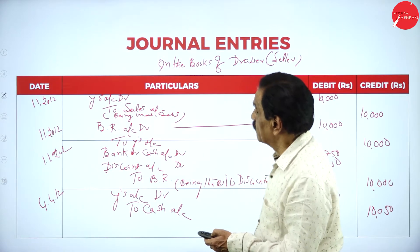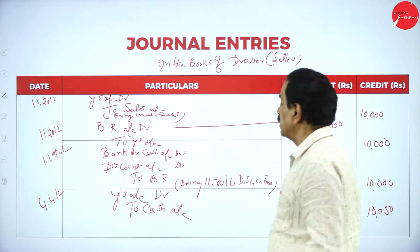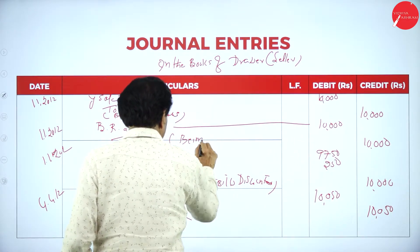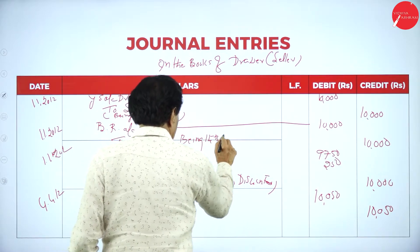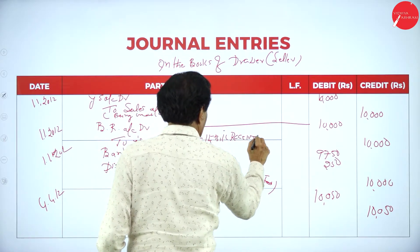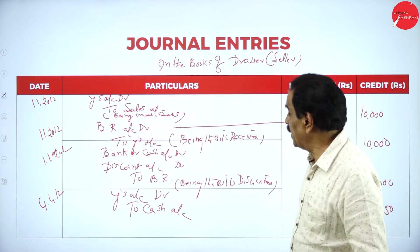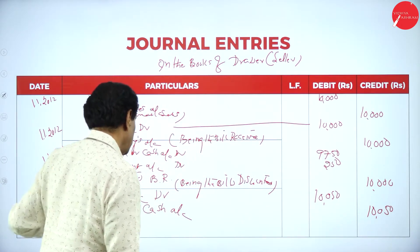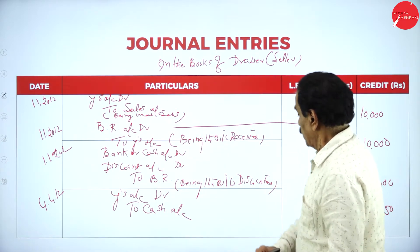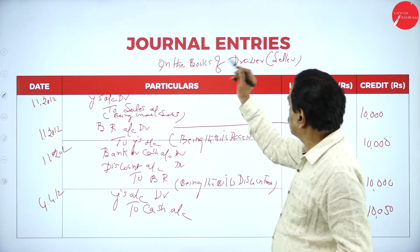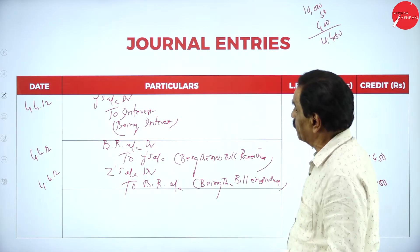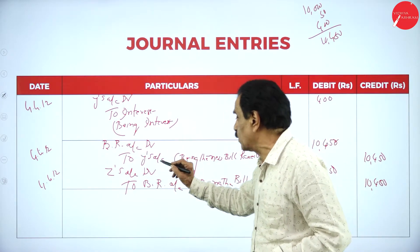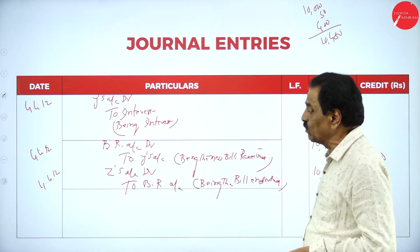Summary of entries for X: first purchase — VICE account debit to sales account. Then he receives the bill: BR account debit to VICE account. On the due date the bill is honored. X pays the bill on behalf of Y — 10,050. Interest is charged. Y's account — including interest, he receives the bill. BR account debit to VICE account. Same bill endorsed to Z.